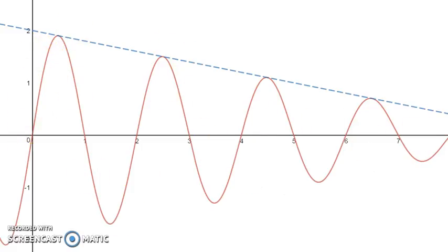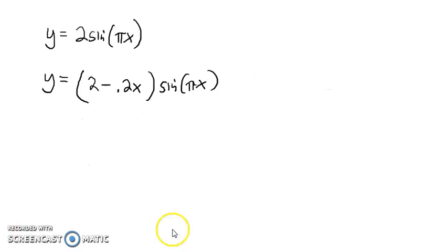In this case, the midline is constant at 0, but the amplitude, you can see the 2 minus 0.2x line shown in blue, we're oscillating above and below the midline up to that decreasing amplitude.